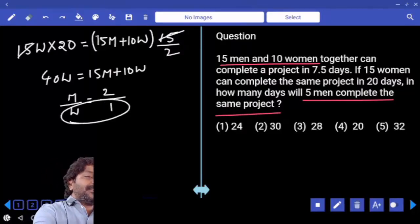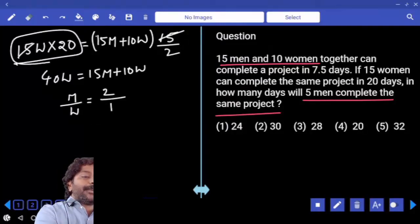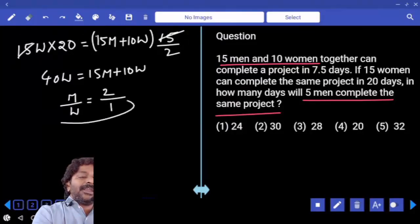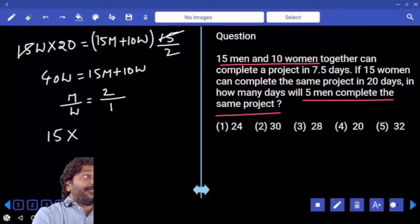If one woman can do one unit, 15 women can do 15 units per day. Like that, they need to work for 20 days to complete the work. That is 20, and this is the total work.